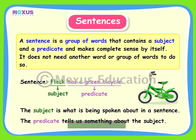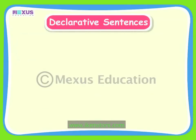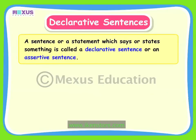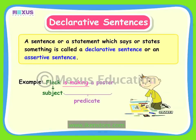All sentences are not the same. They may be of different kinds. Let us learn about the four different kinds of sentences. A sentence may tell us something or state a fact. A sentence or a statement which says or states something is called a declarative sentence or an assertive sentence. For example: Fleck is making a poster. This sentence simply states or declares that Fleck is making a poster.